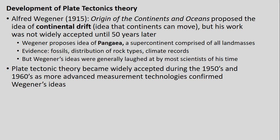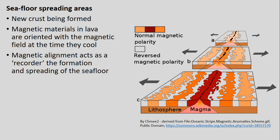This brings us back to the idea of a scientific theory. As discussed earlier, a scientific theory requires multiple lines of evidence and the inability to disprove an idea. Plate tectonic theory became much more widely accepted during the 1950s and 1960s as more advanced measurement technologies were developed. These were able to confirm Wegener's ideas about continental drift. One key piece of evidence was seafloor spreading — those areas where we see the youngest crust ages, where new crust is actually being formed at mid-ocean ridges.